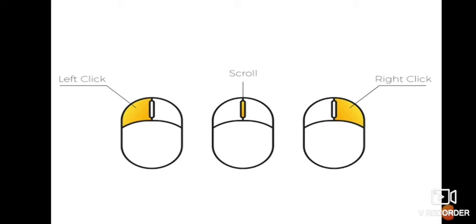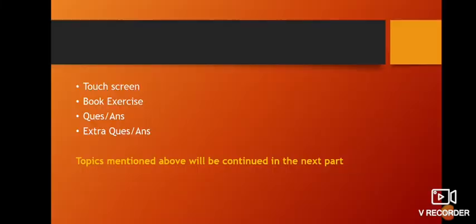Let's recap: if you press the left button one time, that is single click; two times is double click. If you press the right button one time, that is right click. If you move the scroll wheel, that is scrolling. Now only one topic is left — touch screen — and then we will do the book exercise, question answers, and extra question answers.